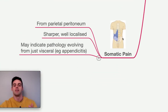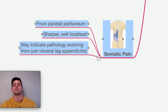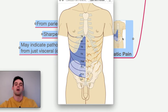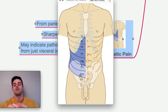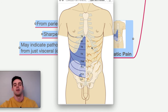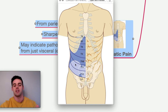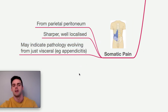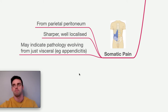Somatic pain is the kind of pain we're normally accustomed to — well localised, like nicking your skin. The parietal peritoneum lines the inside of the abdominal wall, and if there is inflammation or chemical irritation there, it corresponds to the overlying skin level. For example, chemical irritation from appendicitis is generally felt around T10–T11. This tends to be sharper, and focal peritonism may indicate an evolving pathology progressing from visceral to more widespread.